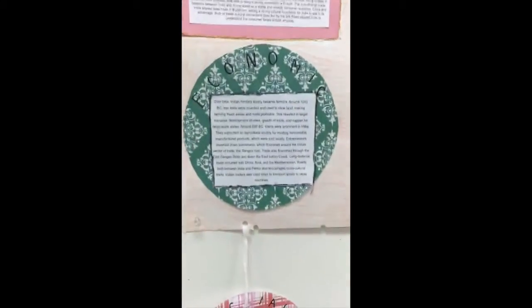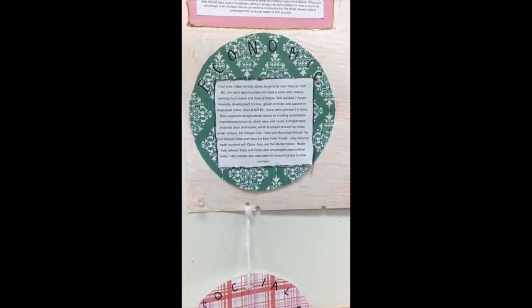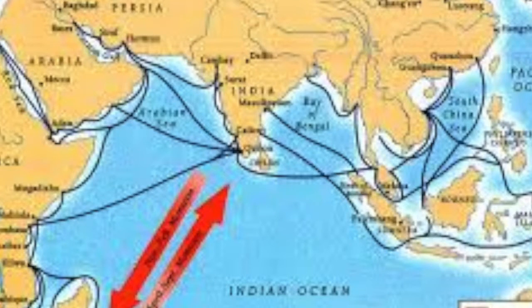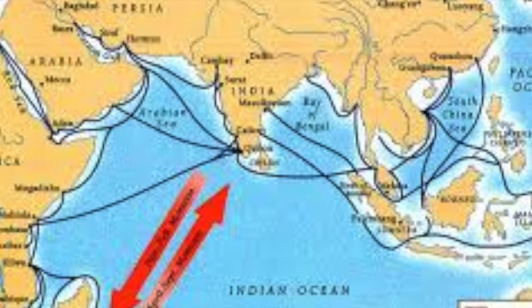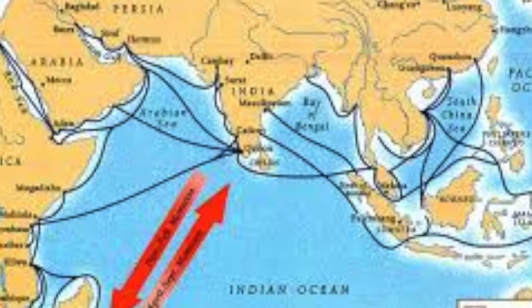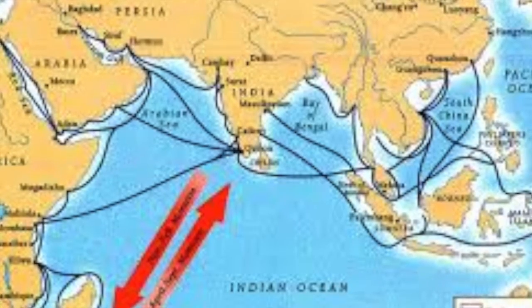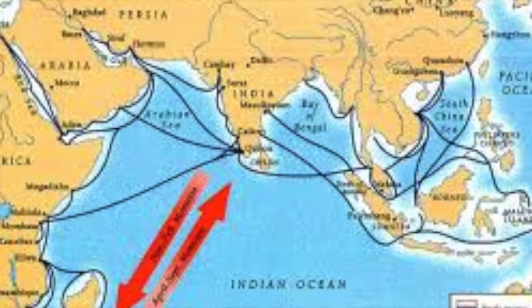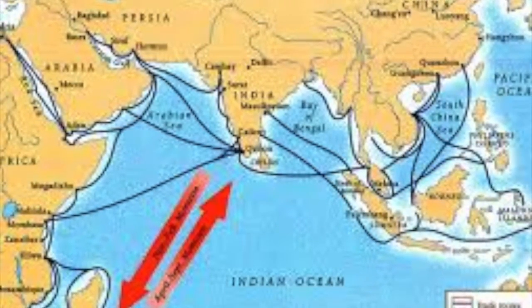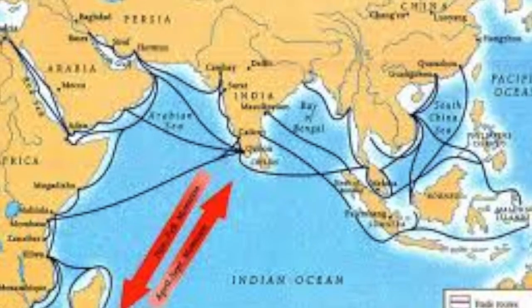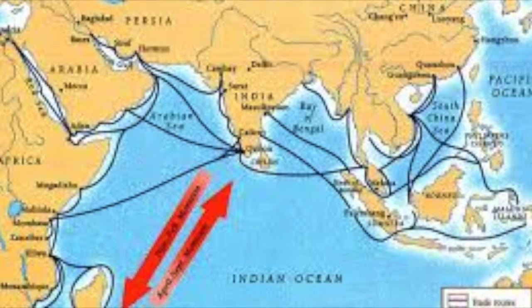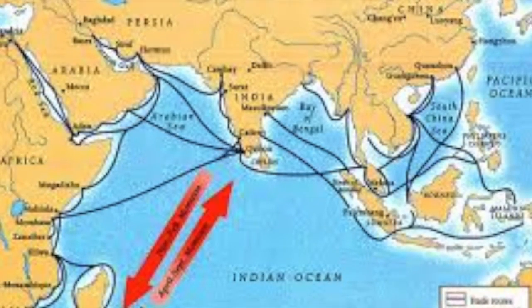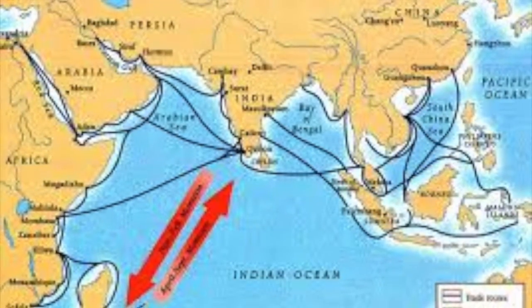India has a thriving economy filled with agriculture, manufacturing, and trade. Over the past 1,000 years, Indian herders have shifted to agriculture. This shift allowed for the growth of towns and cities where there was a surplus of food to support them. Now we see thriving cities trading along the Ganges River, the East Ganges Delta, and the East Indian coast.